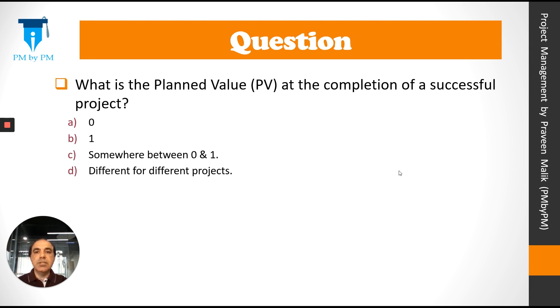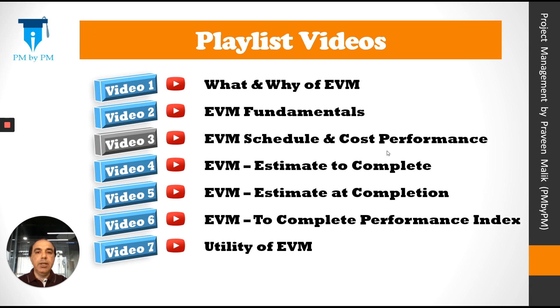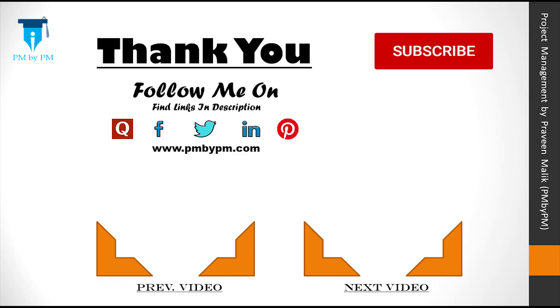So I have a question for you: what is the planned value at the successful completion of a project? Is it 0, 1, somewhere between 0 and 1, or different for different projects? Please leave a comment below. This was our third video in the playlist — we talked about EVM schedule and cost performance. The next video is about Estimate to Complete. If you want to download this PPT, please click on the link in the description below.